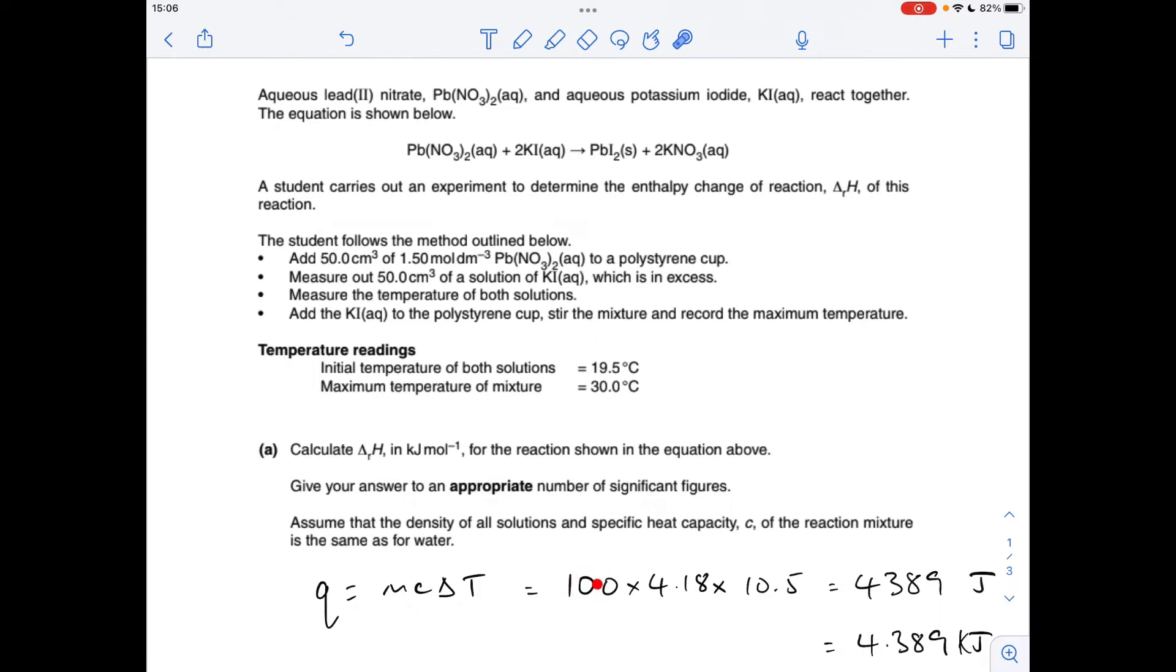So M is the combined volumes 100 cm cubed, so from the density being the same as water that will be 100 grams. Specific heat capacity of the solution again is the same as water so that's 4.18. The delta T is just the difference between those two temperatures, 10.5 degrees C. So in terms of joules we get 4389 but we're going to put it straight into kilojoules, 4.389 kilojoules.